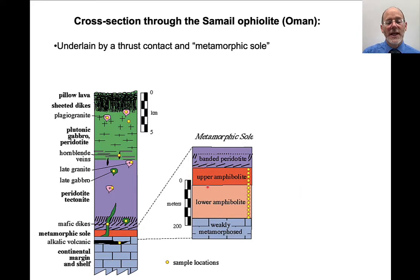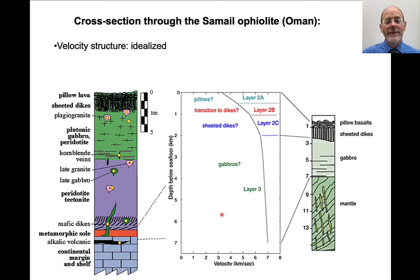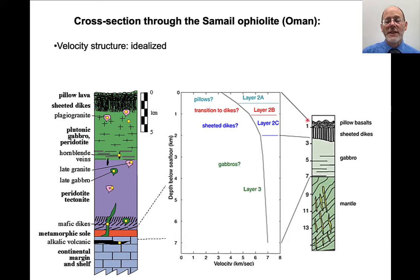The ophiolite is underlain by a thrust contact. Typically you see sheared peridotite at the bottom, with a temperature gradient — higher temperature rocks towards the ophiolite sequence and lower temperature rocks going downward. Looking at the seismic velocity structure of oceanic crust, it can be separated into different layers: a low velocity layer 2a, intermediate 2b, higher 2c, and then very high layer 3. These broadly correspond to rocks seen in ophiolites — lower velocity layers are pillow basalts and sheeted dikes, higher velocities for the gabbros, and highest velocities for the peridotites.